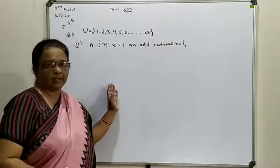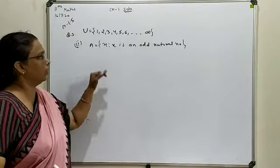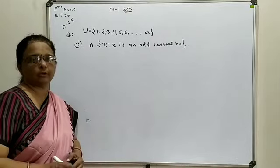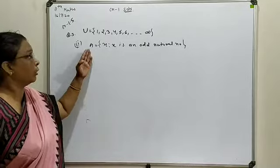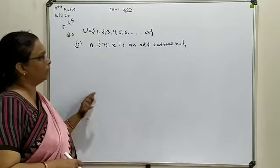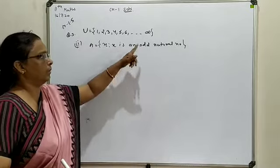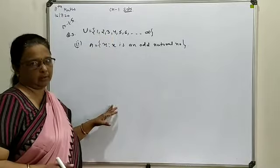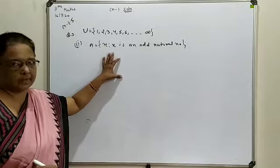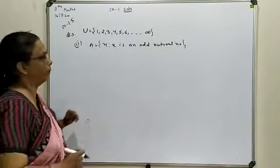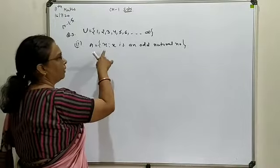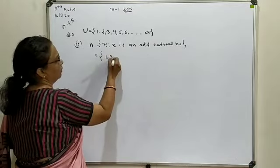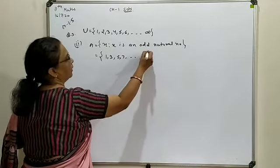As mentioned, it can be handled in two ways: either list out all the elements of set A and then write its complement, or write it in statement form. If we write complement of A in statement form, we write {x : x is an even natural number} — meaning odd combinations are cut from U and the remaining combinations are written. The other way: list out all odd elements first. The list of odd natural numbers is 1, 3, 5, 7, and so on up to infinity.